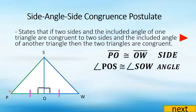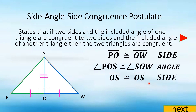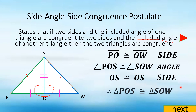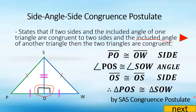Now, for the second side to place the angle in between, side OS is congruent to side OS by the reflexive property. We cannot use the other sides because the angle must be in between the two sides — that is what we call the included angle. Since we now have side, angle, and side, we can conclude that triangle POS is congruent to triangle SOW by the SAS congruence postulate.